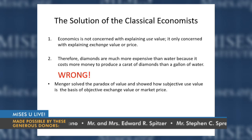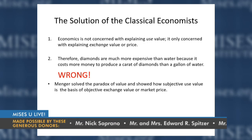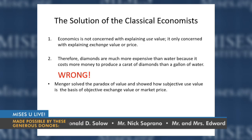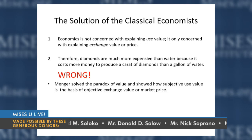Menger solved the paradox of value and showed how subjective use value is the basis of objective exchange value — he brought the two together. He gave us a complete value and price theory. He didn't throw out subjective value and just worry about objective prices. He realized that even though prices are important, you have to base them in human action, in people striving to satisfy their wants.